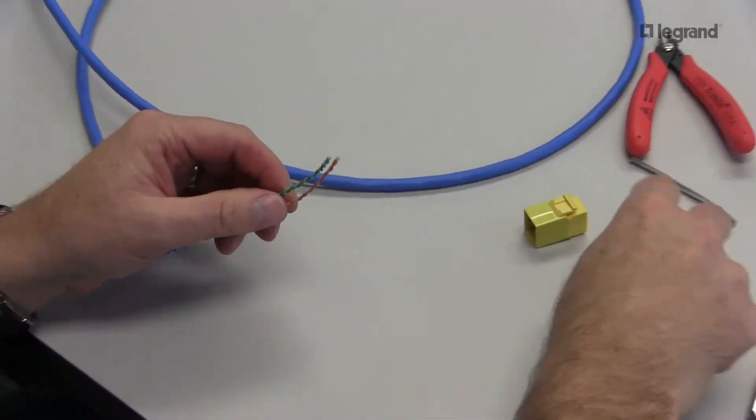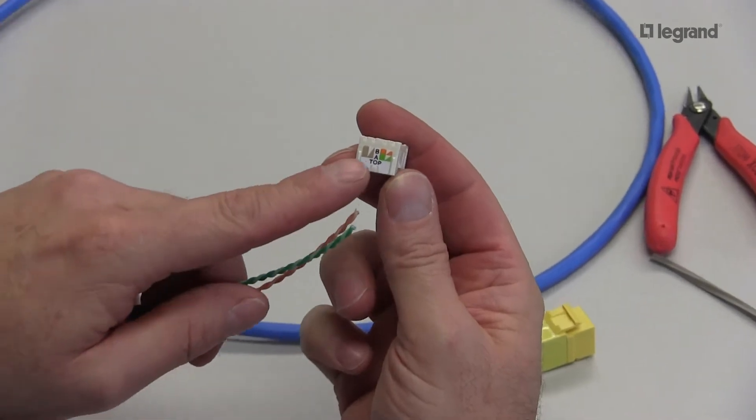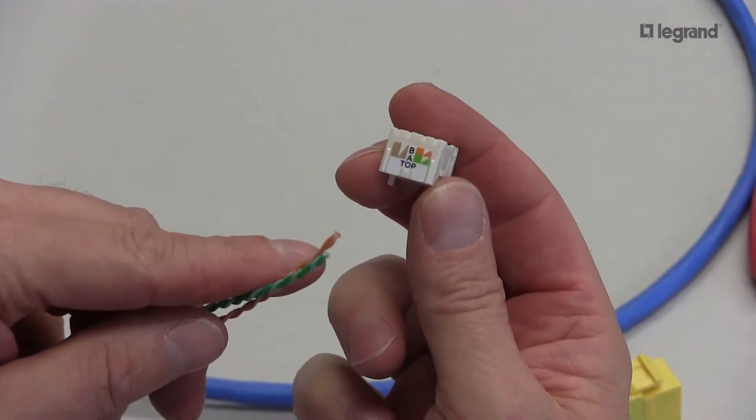Now when you look at your lacing cap, it has a split, a divide in it. You can always do an A or a B, so make sure you pay attention to your color codes. I'm going to show a B right now.